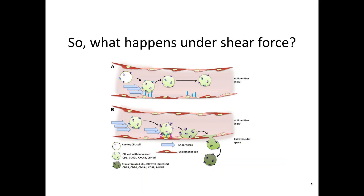So what happens when we put CLL cells under shear force? In static cultures, the ability of CLL cells to migrate may be completely independent of CD62L, because its primary role in the vasculature is essentially like a cellular grappling hook. As cells move through blood vessels, CD62L interacts with its ligand PNAD expressed on endothelial cells, arresting the cells on the vascular wall. This is why we want to model vascular-leukemia cell interaction under shear stress.